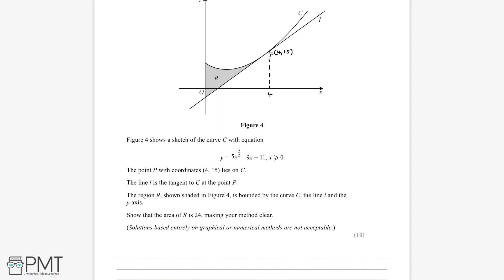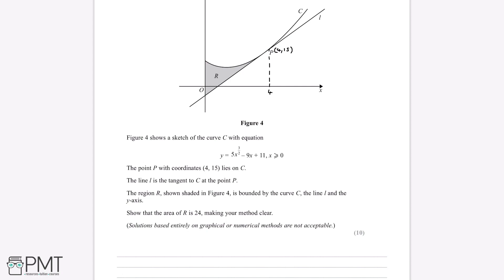So if we find this gradient, which is the same for both of them, then we can find an equation for the line L, because we already have a point that L passes through — (4, 15) — and a gradient means we can find the equation of the line. So we want to find the gradient of C at (4, 15), because we know it's the same for L.